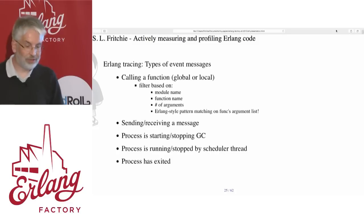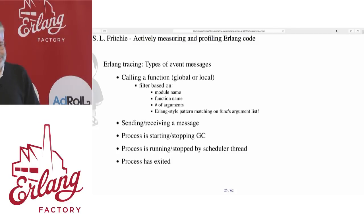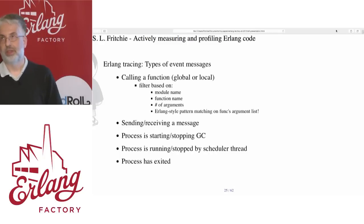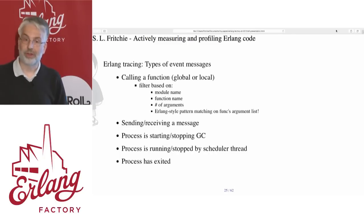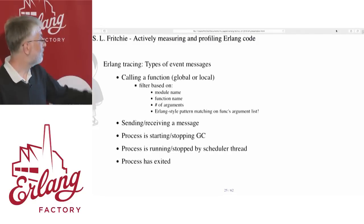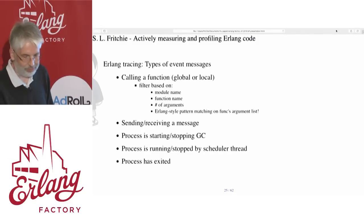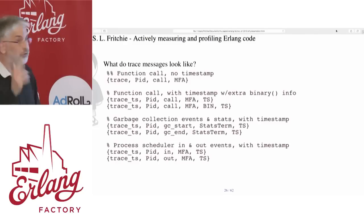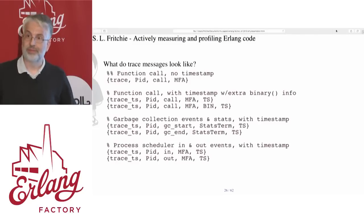Sending and receiving a message, a process has started or stopped a GC collection either a minor or a major one, a process is running or stopped by the scheduler, if a process is exited — and a few more that didn't fit on the slide. They're just tuples. It's simple.